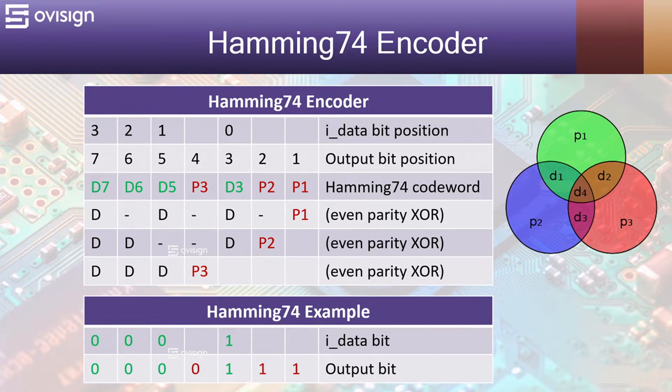P1 is the modulo two sum of D0, D1 and D3. P2 is the modulo two sum between D3, D2 and D0. P3 is the modulo two sum between D3, D2 and D1.